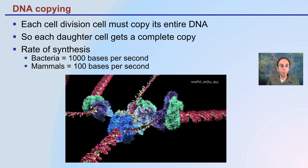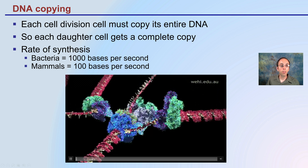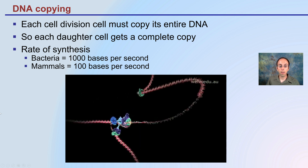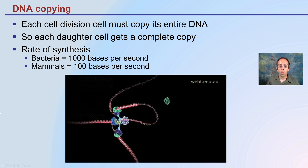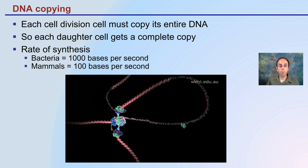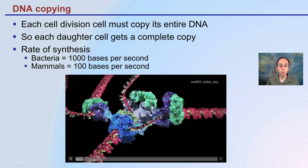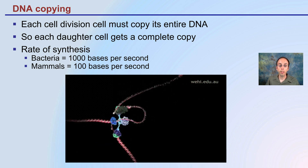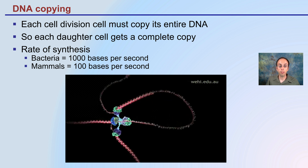During DNA copying, each cell division must copy the entire DNA sequence so that each daughter cell gets a complete copy. The rate of synthesis is very fast. In bacteria, replication occurs at about 1,000 bases per second, while in mammals it is only about 100 bases per second — but still a very quick overall process for replicating those DNA strands.